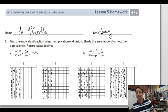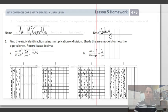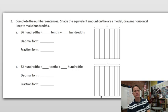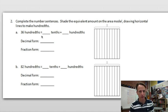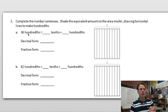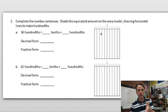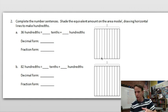And if I do the same thing — six columns here — one, two, three, four, five, six — believe it or not I have 60 hundredths there. So that's number one. Let's go on to number two.